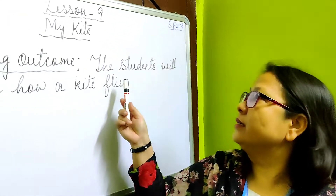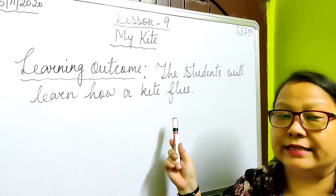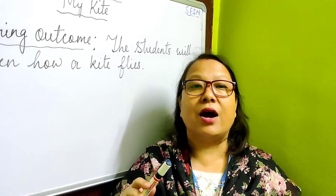Before we start, let us see the learning outcome. Look at the board — the students will learn how a kite flies. You will learn how the kite flies in the poem. Okay, look at the book: flip flap, flip flap, rises my kite up and up in the sky.